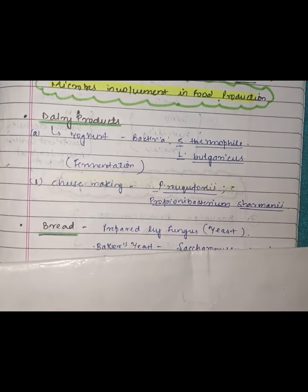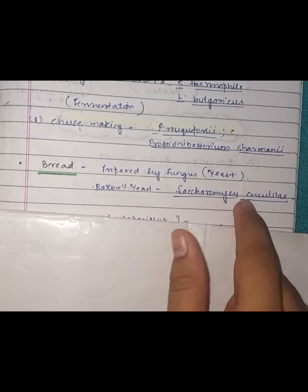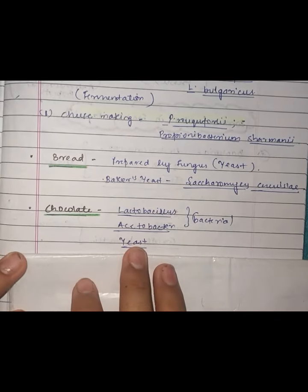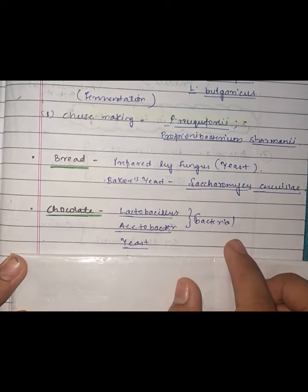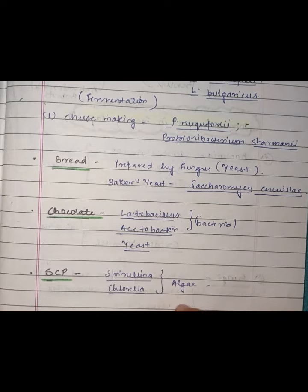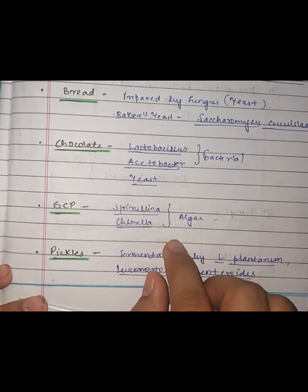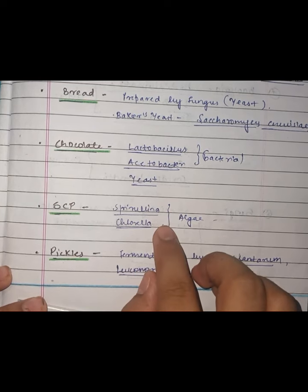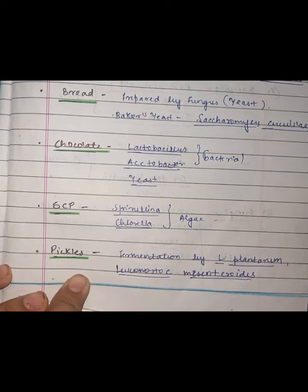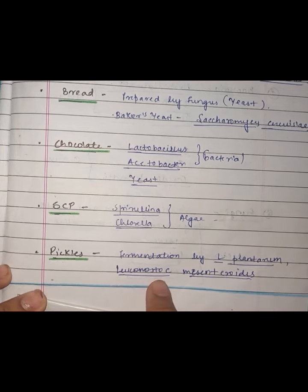Bread is prepared using the fungus yeast, known as baker's yeast or Saccharomyces cerevisiae. Chocolate is prepared using bacteria like Lactobacillus or Azotobacter, and yeast. For single cell protein (SCP), algae like Spirulina and Chlorella are involved. For pickles, fermentation bacteria like Lactobacillus plantarum or Leuconostoc mesenteroides are used.